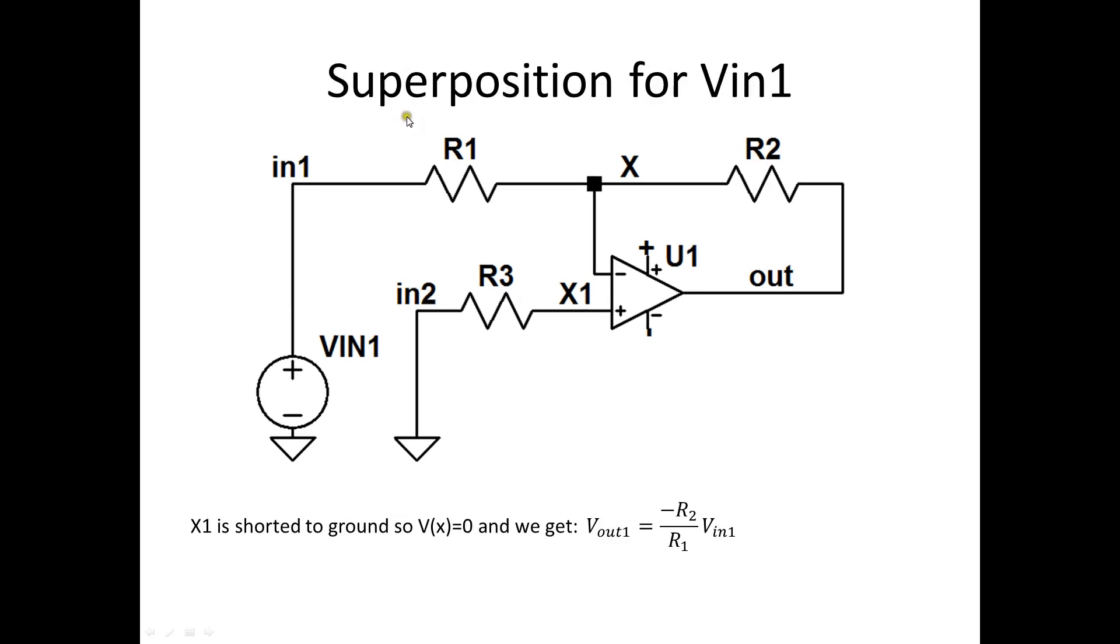You guessed it. We'll use superposition. We short Vin2 and this resistor. Now, if this is at zero volts and no current can flow into this pin, then x1 must be at zero volts as well. And so we're right back to our original inverting gain equation. Vout equals minus R2 divided by R1 Vin1.